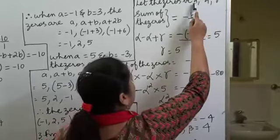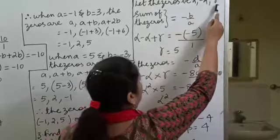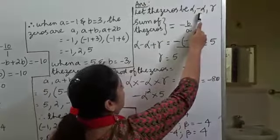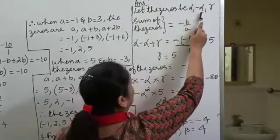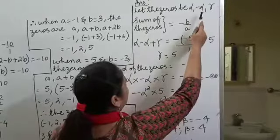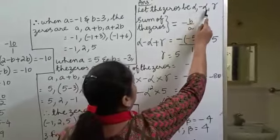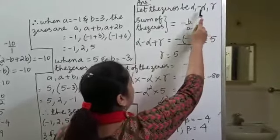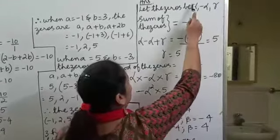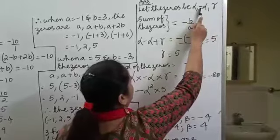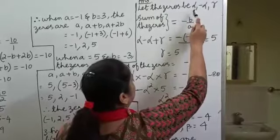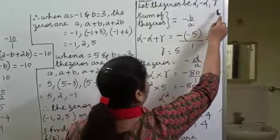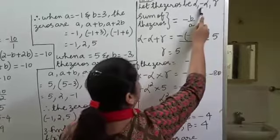We are assuming the zeros are alpha, beta and gamma, with beta equal to minus alpha. You can see that these two zeros are equal in magnitude — both alpha — but opposite in sign: plus and minus. So the zeros are now alpha, minus alpha and gamma, where beta is minus alpha.